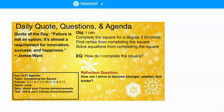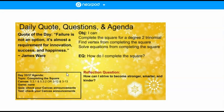Objective: I can complete the square for a degree-2 trinomial, find the vertex from completing the square, and solve equations from completing the square. Your central question is: how do I complete the square? On the next slide, go ahead and type your response — how can you strive to become stronger, smarter, and kinder?